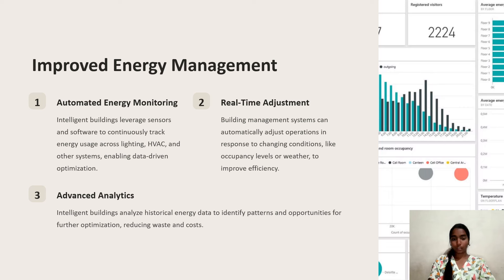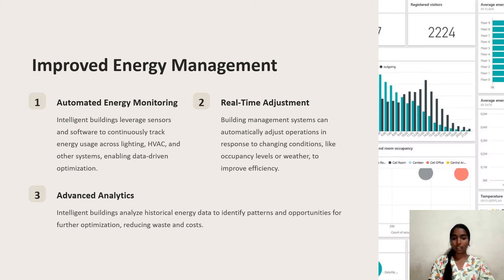Improved energy management involves three components: automated energy monitoring, real-time adjustment, and advanced analytics. Intelligent buildings leverage sensors and software to continuously track energy usage across lighting, HVAC, and other systems, enabling data-driven optimization. Building management systems can automatically adjust operations in response to changing conditions like occupancy levels or weather. Advanced analytics analyze historical energy data to identify patterns and opportunities for further optimization, reducing waste and costs.